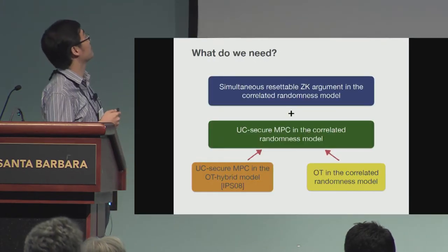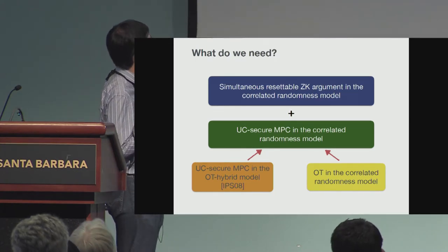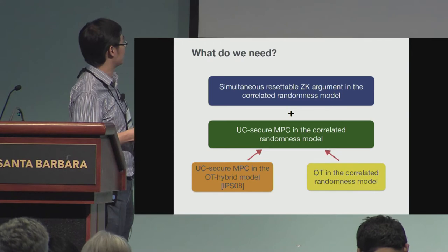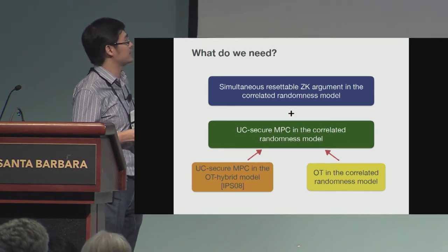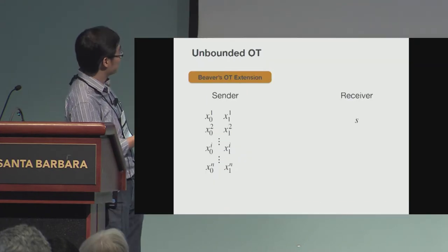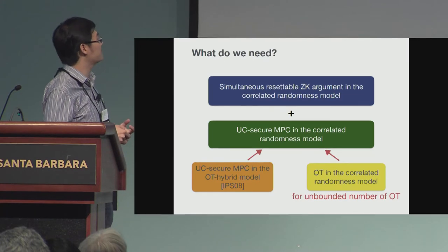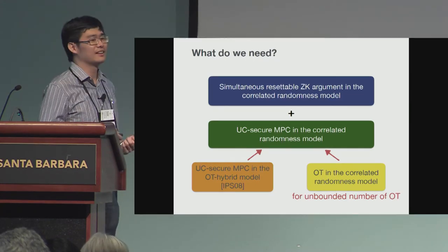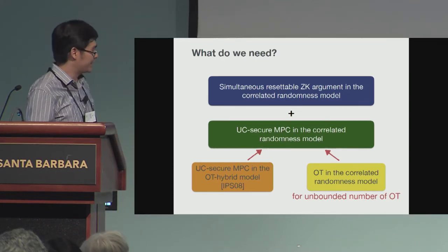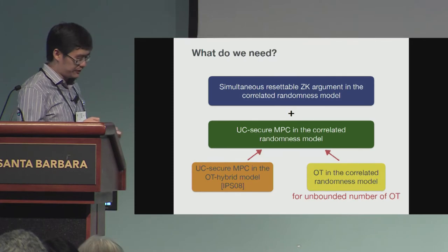The second component can be constructed from two protocols. The first is the UC-secure MPC in the OT hybrid model, done by Ishai, Prabhakaran, and Sahai. The second part is OT in the correlated randomness model — this is essentially an OT extension, but with a special addition: this is for an unbounded number of OTs. We need an unbounded number of OTs because we embed all the correlated randomness in the tokens, but we do not know how many times these tokens will be executed, so we cannot fix the number of OTs to embed in the token — requiring a modification to the standard OT extension.